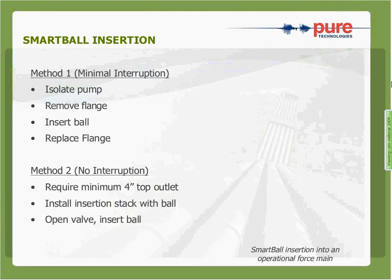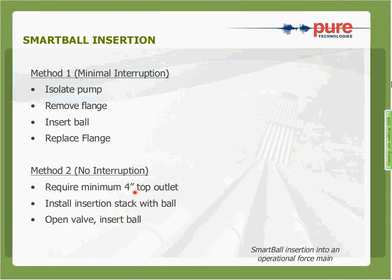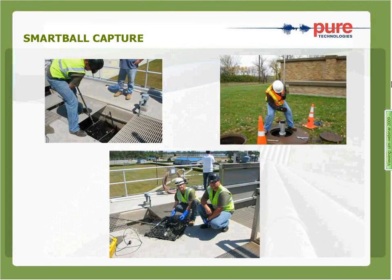The ball is typically inserted through a four-inch outlet on the pipe, is negatively buoyant, and rolls through the pipe. It can roll through many miles of a force main and be captured at a point downstream to survey the pipe. There are two ways to insert the SmartBall into a force main. The first requires minimal interruption — taking the force main down for about 15 minutes to isolate a pump, remove a flange, insert the ball, replace the flange, and turn the pump back on. If it's not feasible to take the pipe out of service, the second method is inserting the ball through a four-inch or larger top outlet on the pipe by installing pressure-tight equipment on the pipe, inserting the ball into the stack of equipment, operating a series of valves, and pushing the ball into the pipeline.